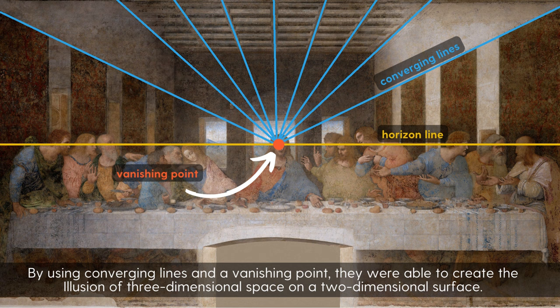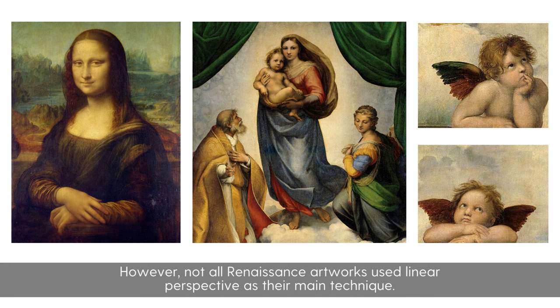By using converging lines and a vanishing point, they were able to create the illusion of three-dimensional space on a two-dimensional surface.